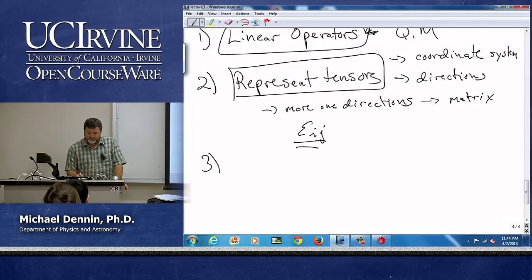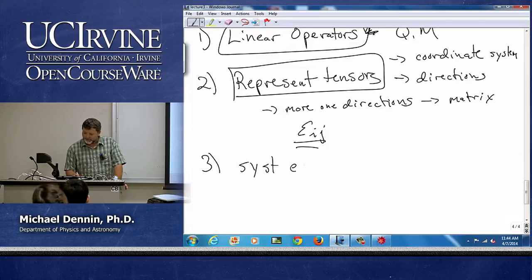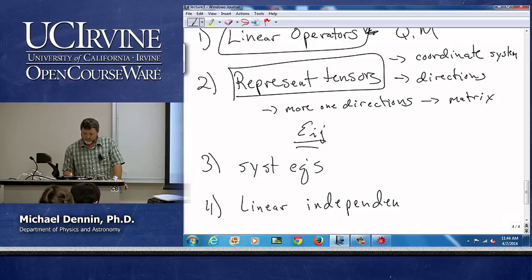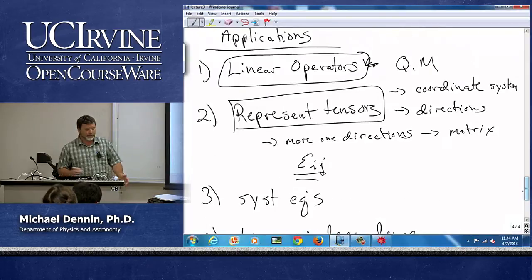We also use them as systems of equations and we can use them to check for linear independence. Those are some of the big things we use them for. But one and two are really the big two.